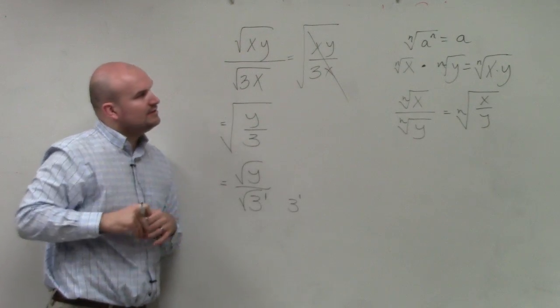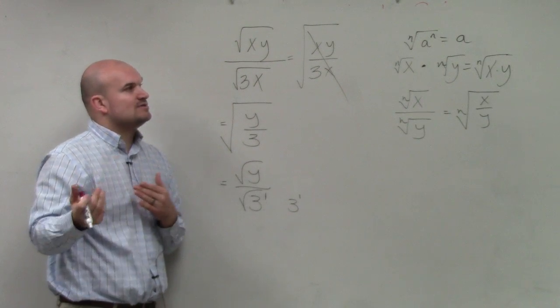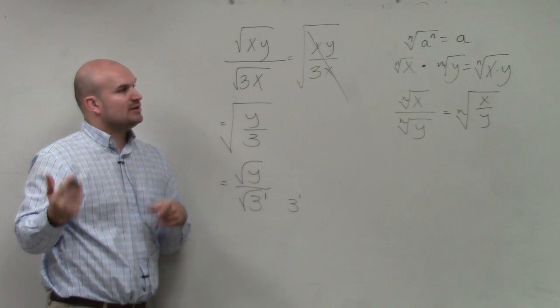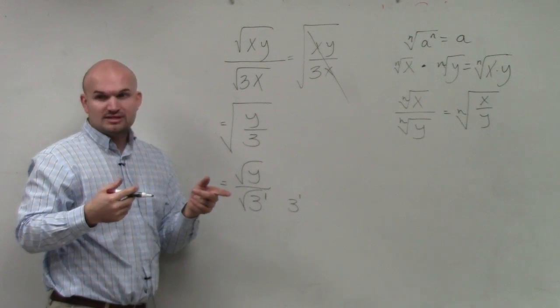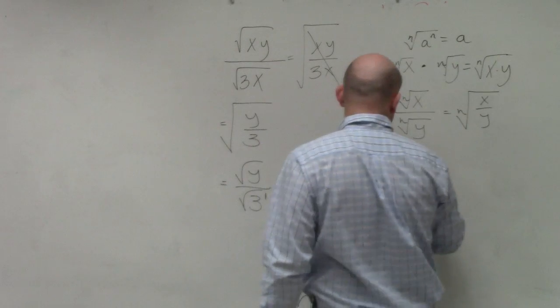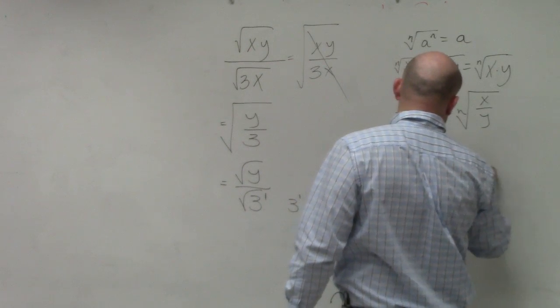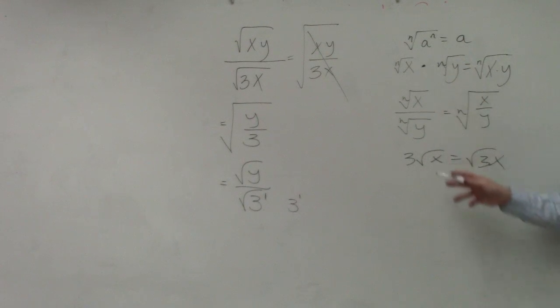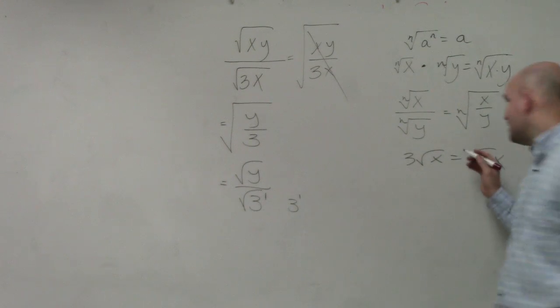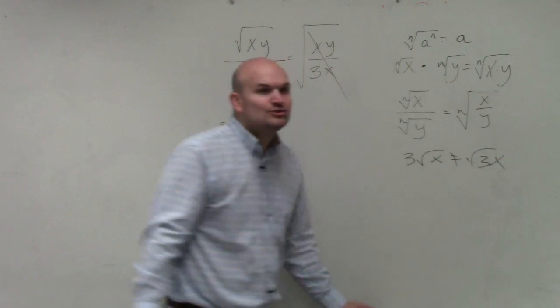Now, is there any rule up there that shows you that any number outside a radical multiplied by a number inside a radical can happen? Is there any rule that says, do you guys, like I'm saying this. I don't remember what it's called. Do I have any, do any of these rules that I have up here represent something that looks like this? No. No, because guess what? You can't do that.